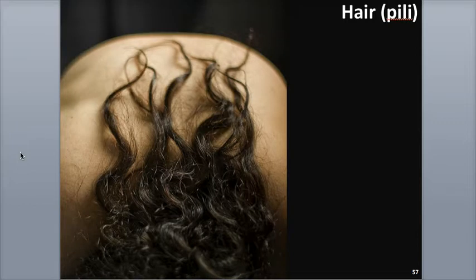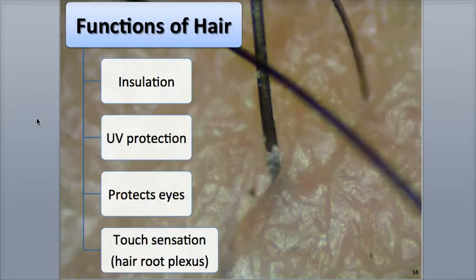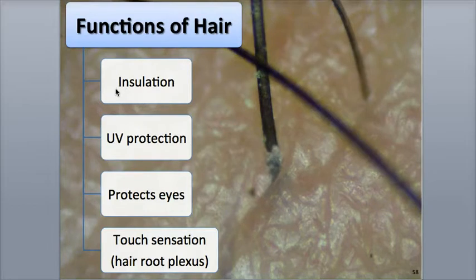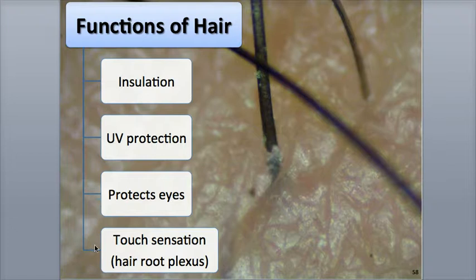Hair distribution is determined in part by genetics and hormones, but is most concentrated on the scalp, eyebrows, armpits, and around the genitals. Hair provides many important functions, including protecting the scalp from physical injury and sunburn, and insulation that minimizes heat loss from the top of the head. The eyes are protected from debris through the eyelashes and eyebrows, and the hairs are associated with sensory receptors called hair root plexuses that can detect light touch.